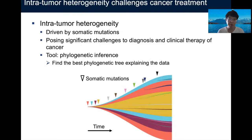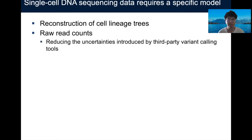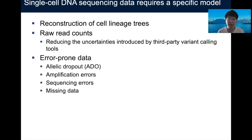The tool people use to study this phenomenon is phylogenetic inference, where we want to find the best phylogenetic tree that can explain the data. In our work, we use single-cell DNA sequencing data, which naturally allows for the reconstruction of cell lineage trees. We use raw read counts as input data in order to reduce the uncertainties introduced by third-party variant calling tools. However, single-cell DNA sequencing data is highly error-prone because of all different kinds of technical errors.